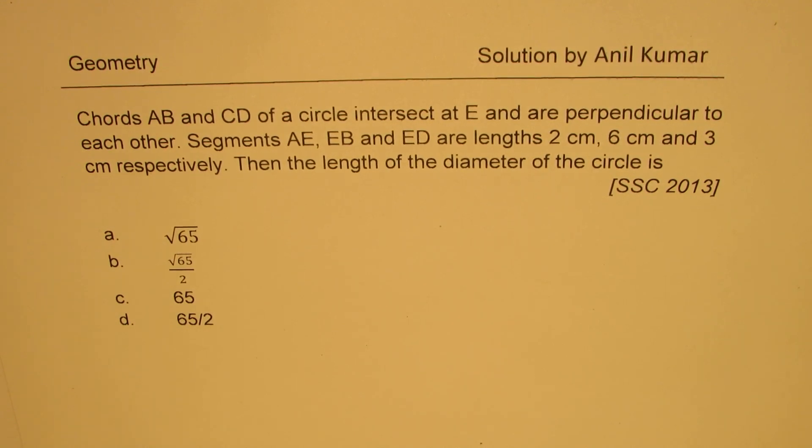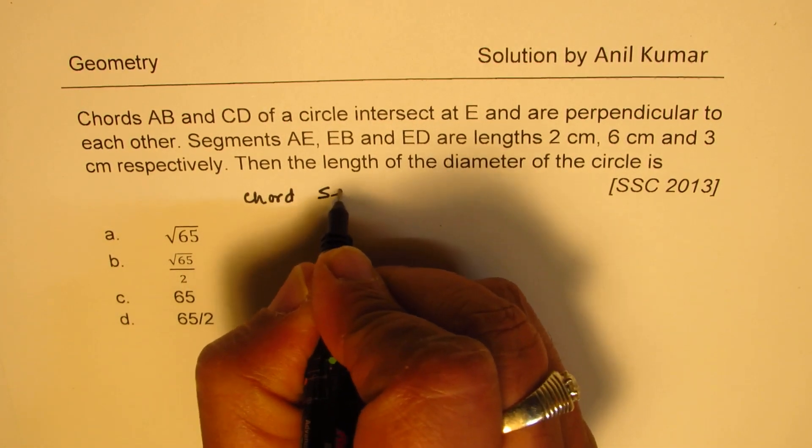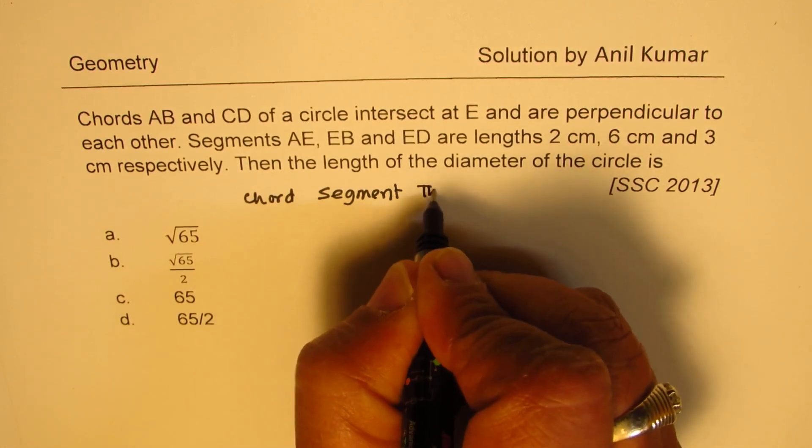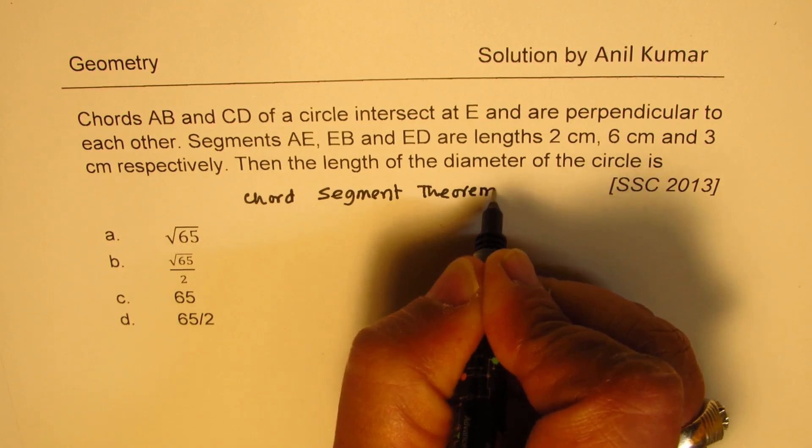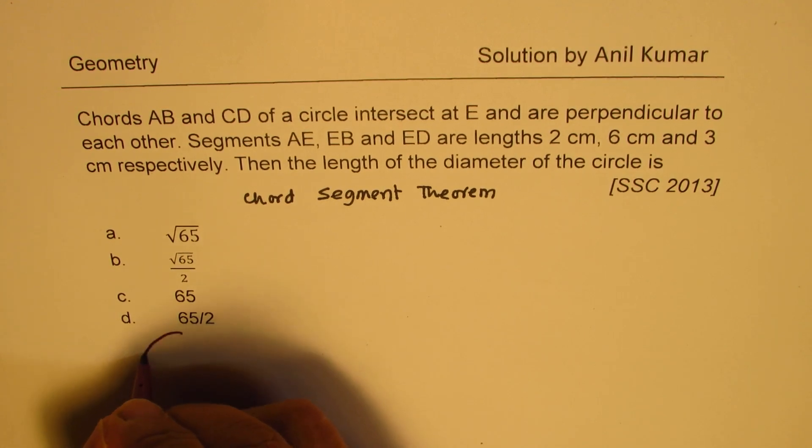Now to solve this question, you need to know two concepts. One, we call a chord segment theorem. Let me sketch a circle, label and then we'll talk about the formulas.